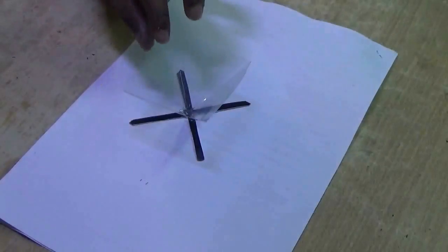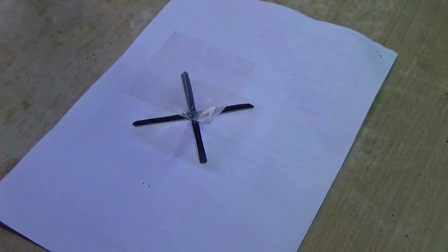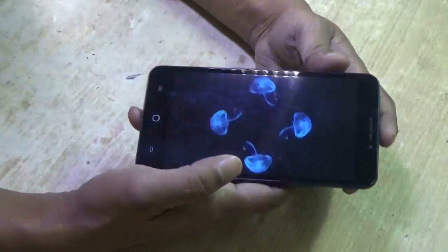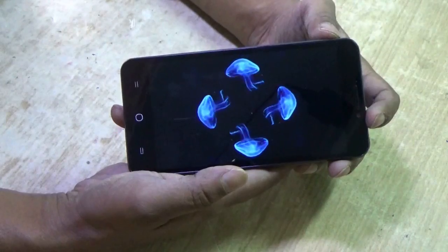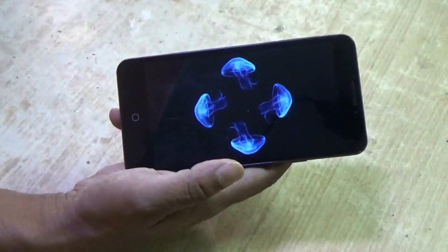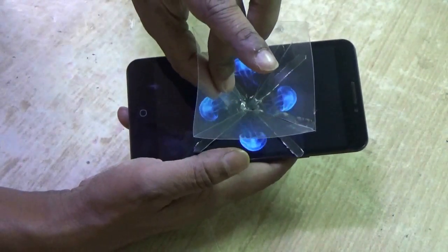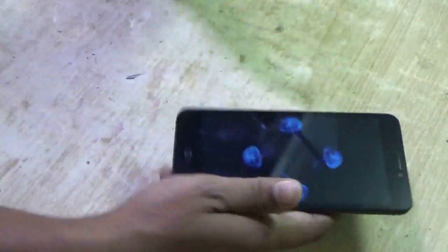This is the projector ready. Now from YouTube, download some holographic image like this, holographic video. Place the projector at the center exactly like this.